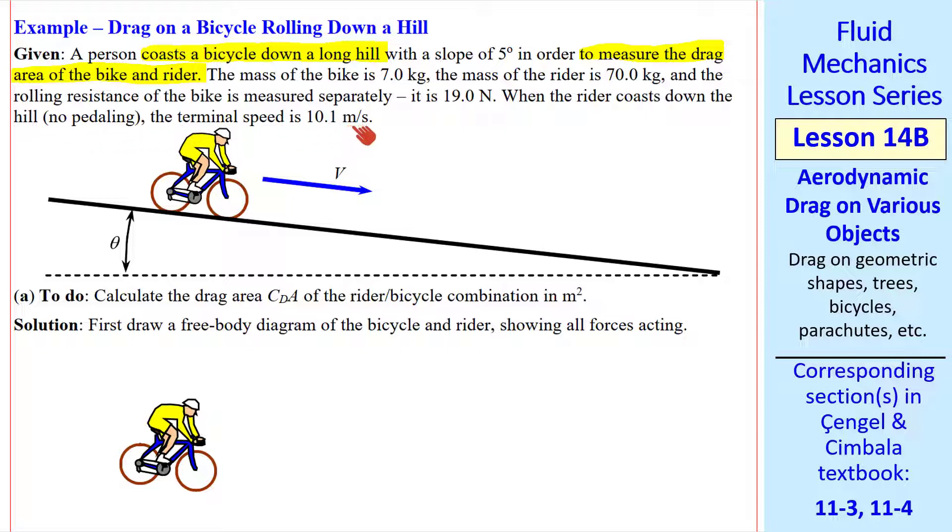And while coasting, in other words no pedaling, the terminal speed is 10.1 meters per second, where terminal speed is defined as the constant speed while coasting down the hill. We'll talk about terminal speed again in later lessons. In part A, we want to calculate the drag area, CDA, of the bicycle rider combination.